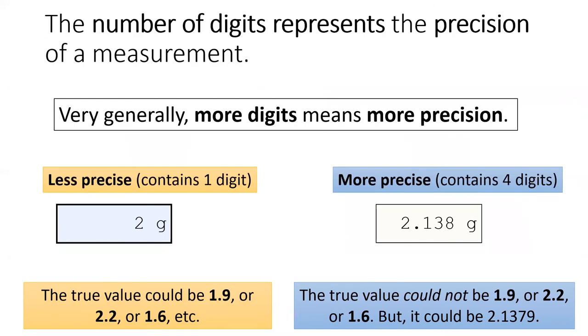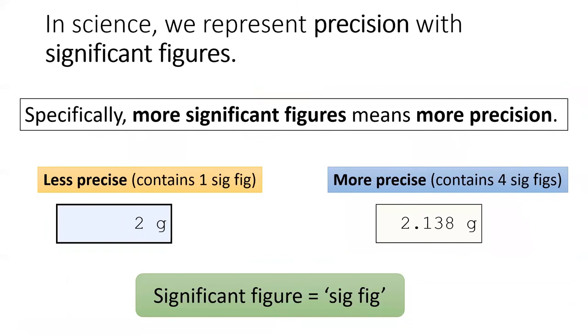In science, the number of digits in a measurement represents the precision. In general, more digits means more precise. There is no perfect measurement. In other words, every measurement contains uncertainty.